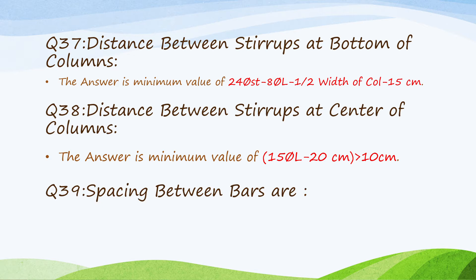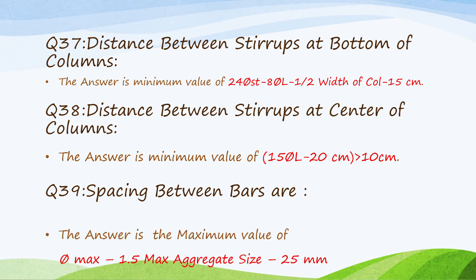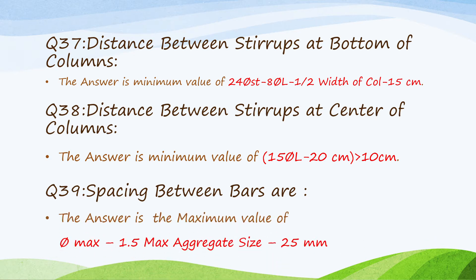Question 39: Spacing between bars. The maximum value of: the biggest diameter used in the concrete element, 1.5 times maximum aggregate size, or 25 mm.